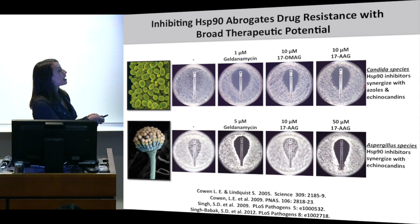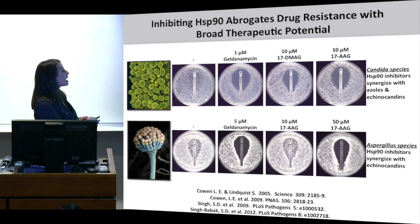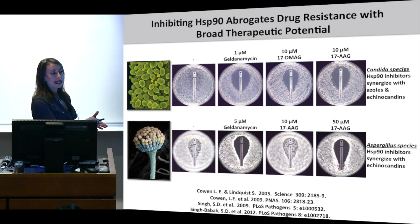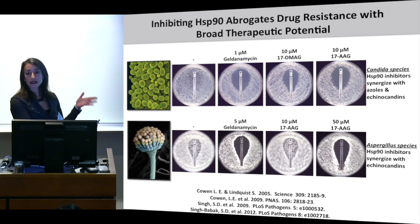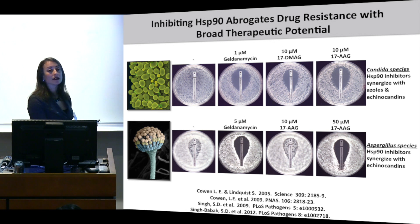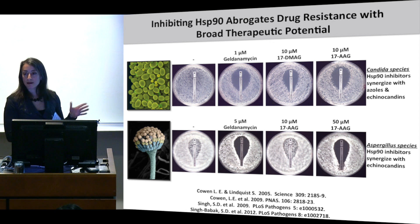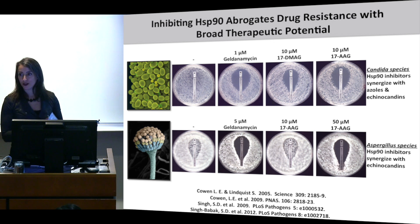Structural analogs in clinical development for cancer also very potently enhance antifungal activity. This works not only with azoles and Candida species, but also with Aspergillus fumigatus and with echinocandins. With the clinical isolate of Aspergillus, which can grow right up to the test strip with the echinocandin, inclusion of the Hsp90 inhibitor geldanamycin produces a beautiful zone of clearing. Clinical analogs require higher concentrations but do have potent synergistic effects.